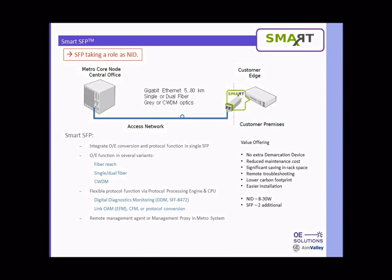Because of this, our Smart SFP can be offered in many different flavors. It can be offered across all our Gigabit Ethernet products — namely, reach from 500 meters all the way up to 80 kilometers — provided in both single fiber and dual fiber versions, and also implemented in either gray optics or CWDM optics.